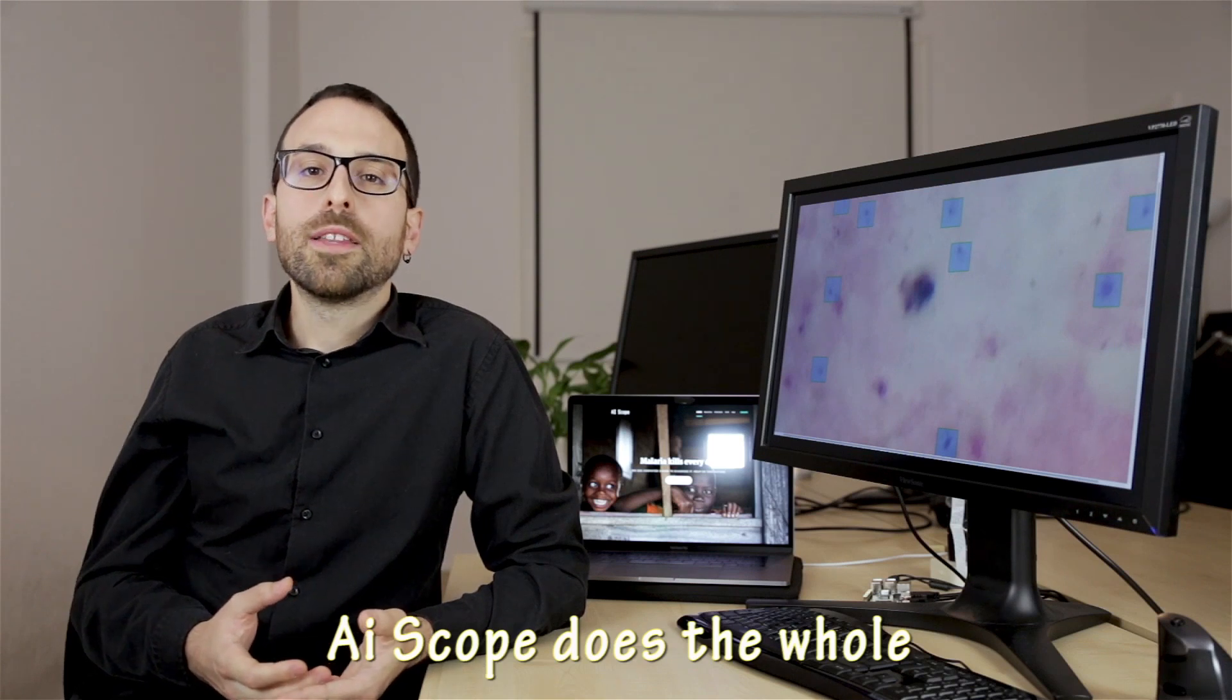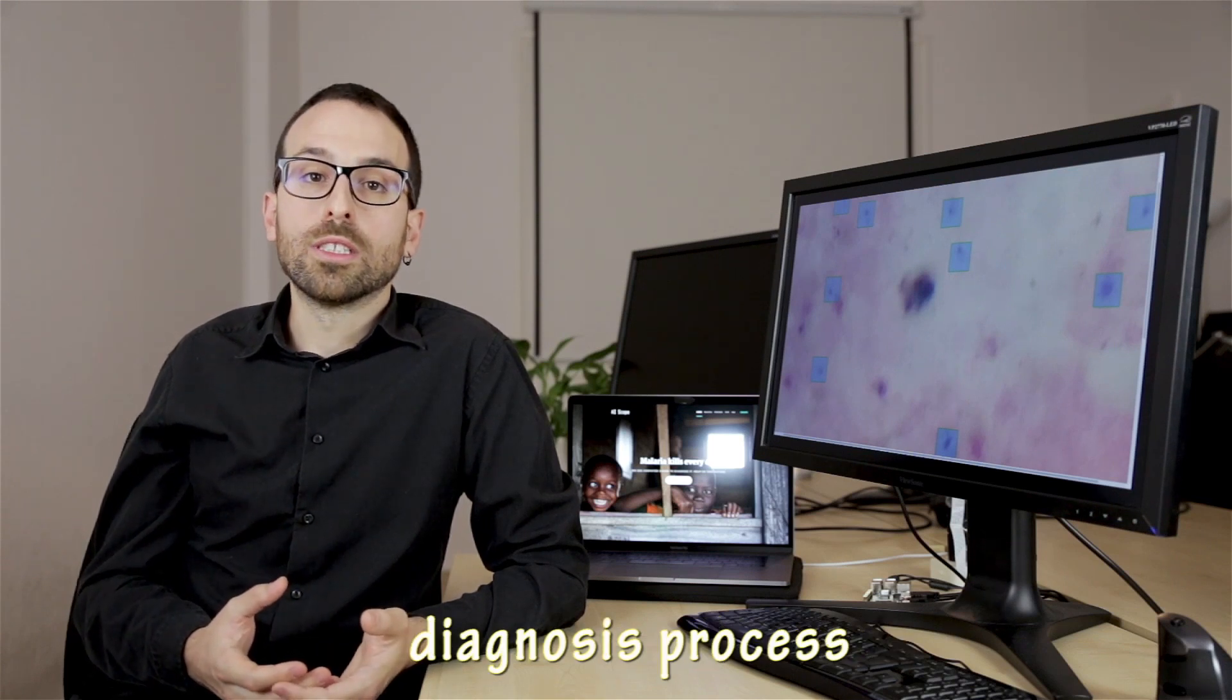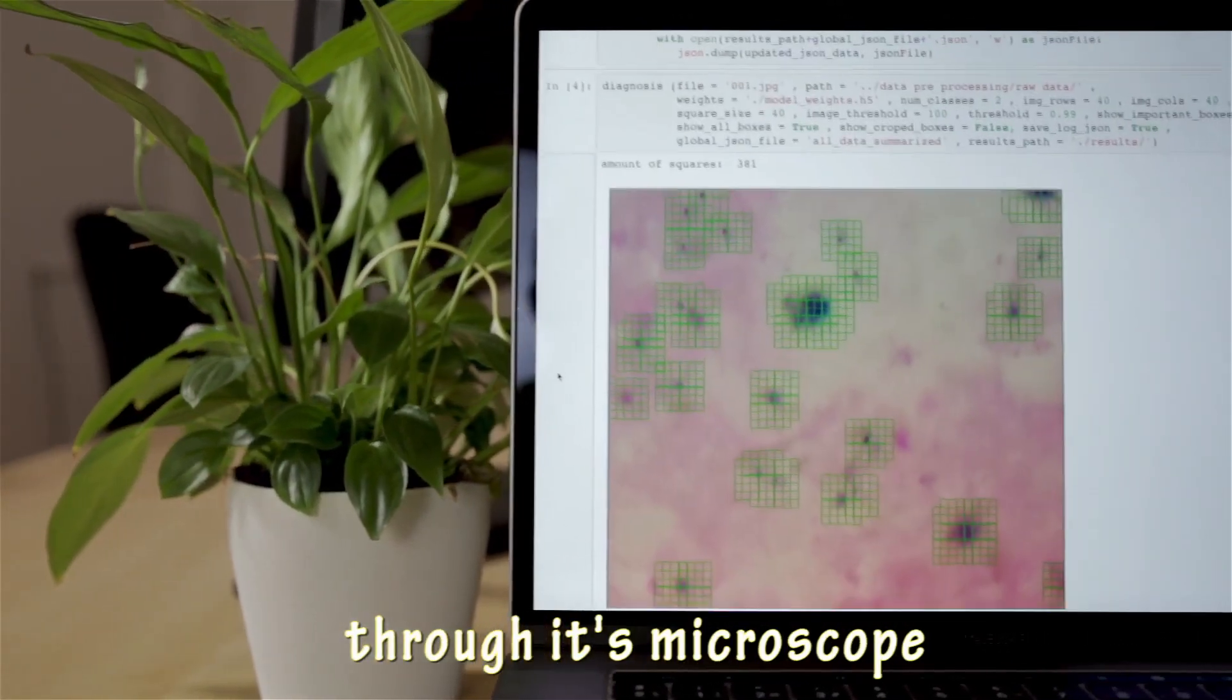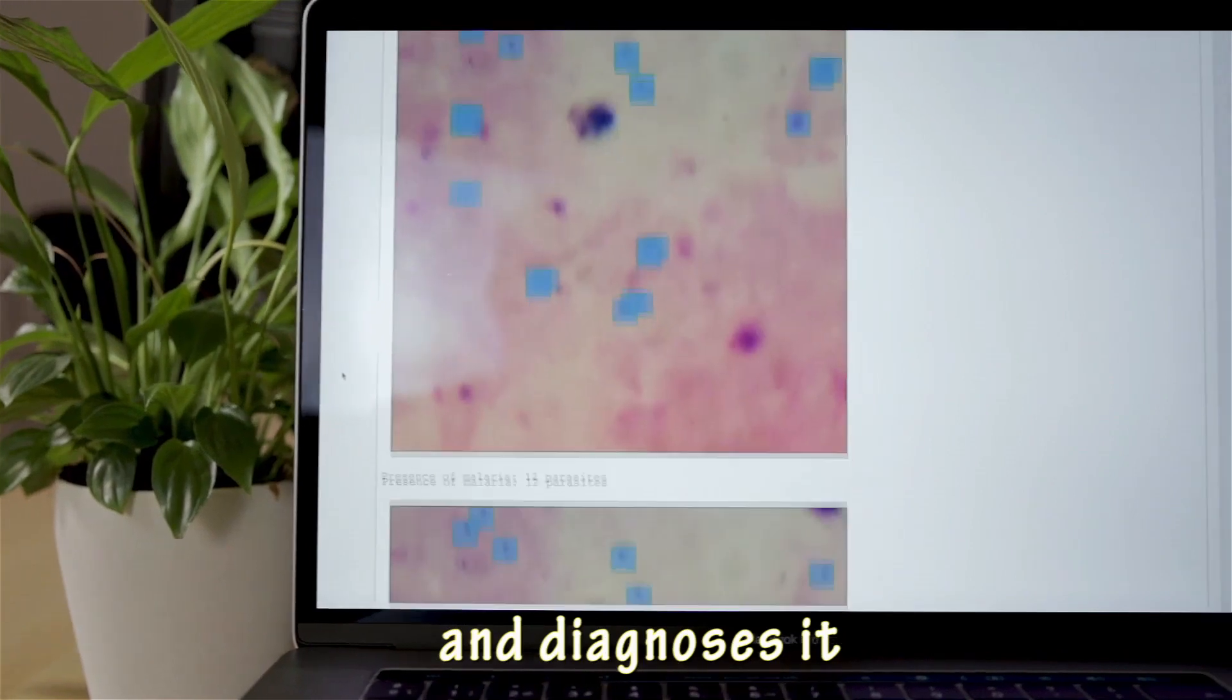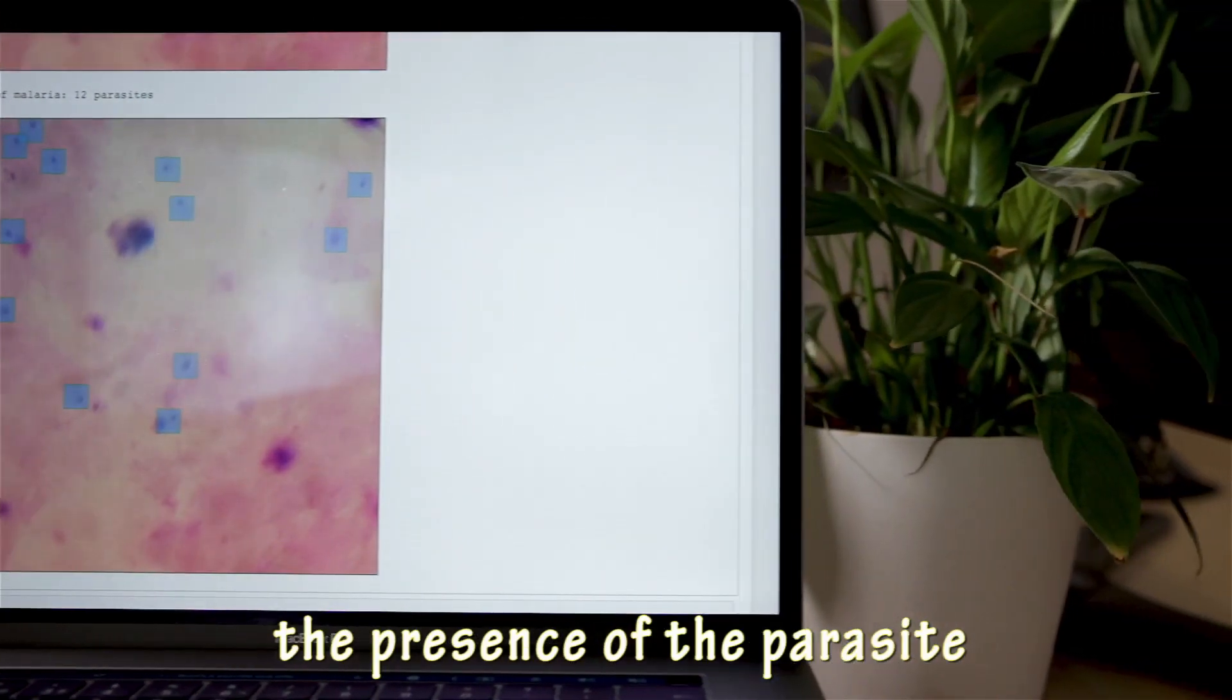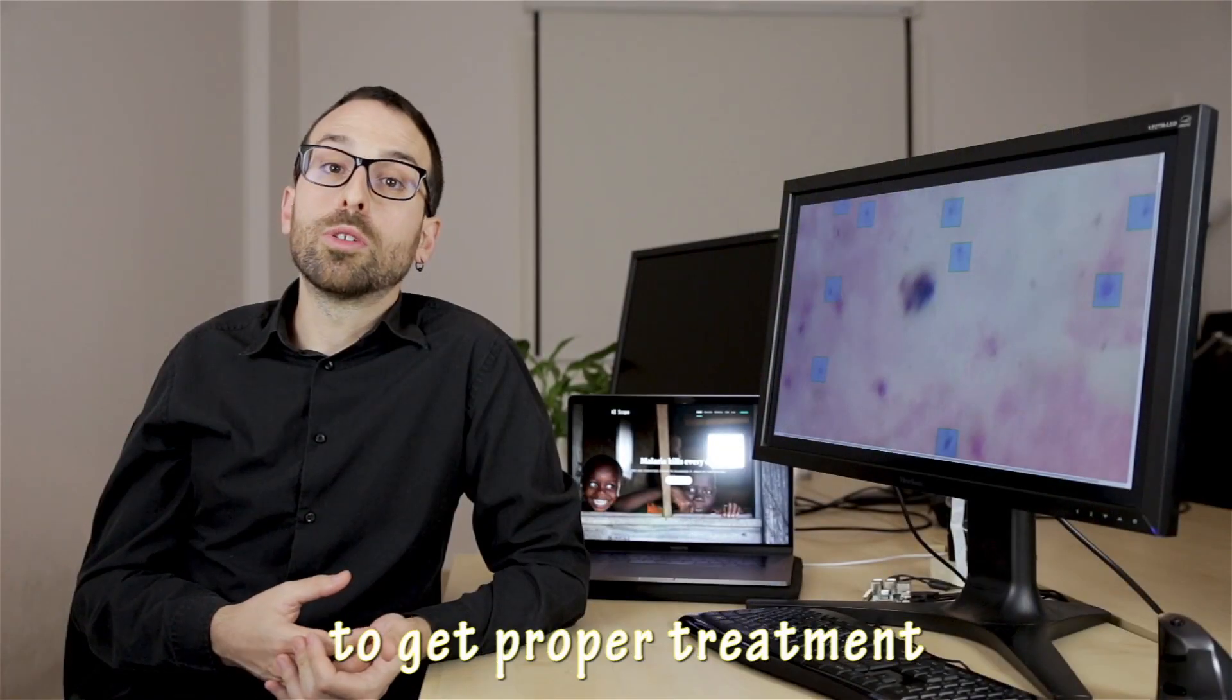AIScope does the whole diagnosis process. You just need a drop of blood and the system takes the pictures through its microscope and diagnoses it. If the machine detects the presence of the parasite, you need to run to visit a doctor to get proper treatment.